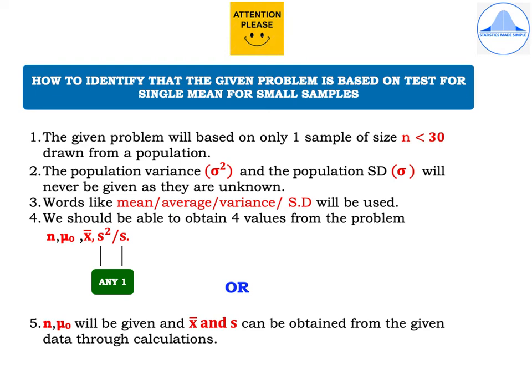Let me now explain how to identify that the given problem is based on tests for single mean for small samples. First, the given problem will be based on only one sample of size n which is less than 30 drawn from a population. Second, the population variance sigma square and the population standard deviation sigma will never be given as they are unknown.